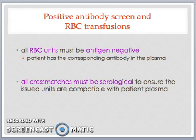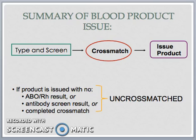What does a positive antibody screen mean for future red cell transfusions? It means that all red cell units transfused to this patient in the future must be antigen negative for the corresponding antibody in the patient's plasma. It also means that all cross-matches in the future must be serologically performed to ensure that the issued units are compatible with the patient's plasma. Therefore, the process and steps necessary to issue blood products are: first, perform the type and screen; then perform either the electronic or serological cross-match depending on the antibody screen results and history check; and finally, the product is tagged and issued from inventory to the patient's dedicated location.